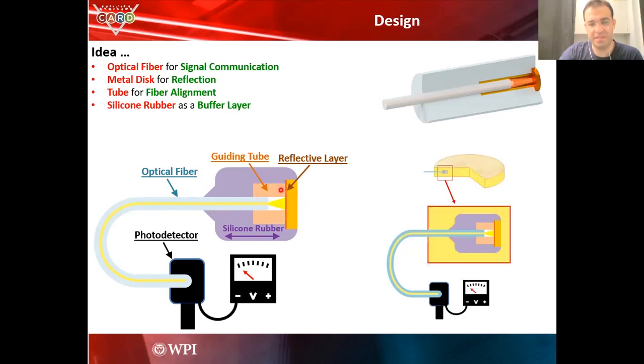The whole thing here is embedded in some kind of very soft rubber. It's silicone rubber, it's quite soft. This silicone rubber covers everything. And we put this piece inside of food. So as they shrink, they force the fiber toward the tube and the distance changes.